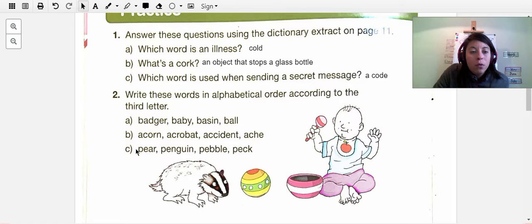Now the third group of words in letter C is pear, penguin, pebble, peck. Now as you can see, the first letter is a P, and the second letter in all of these words is the letter E. So you have to go to the third letter. In this case it's an A. Here it's an N. Here it's B. Here it's C. Wow, this one is really close one to the other, so you have to be really careful when you do this exercise.